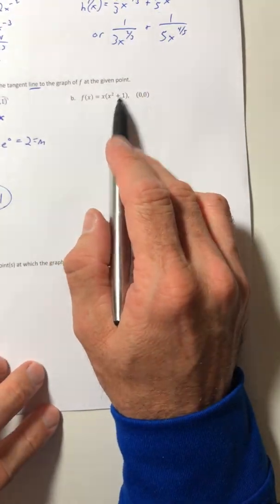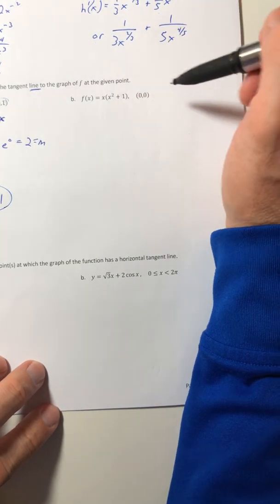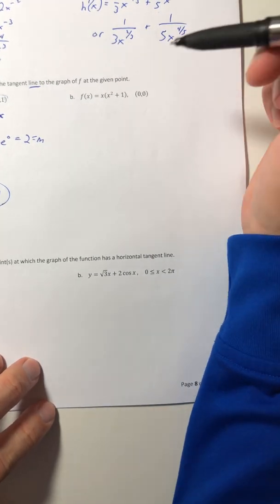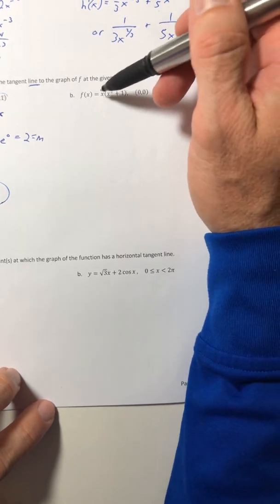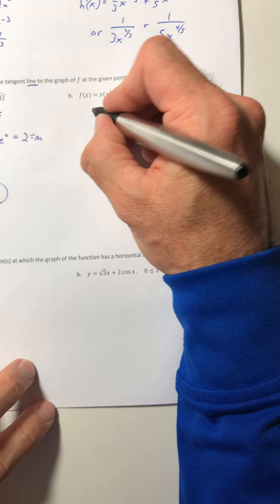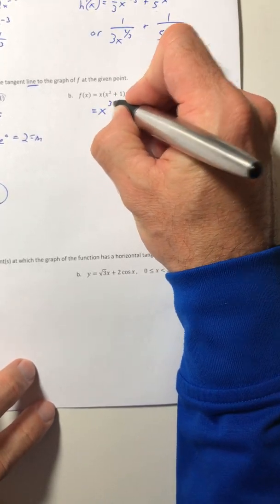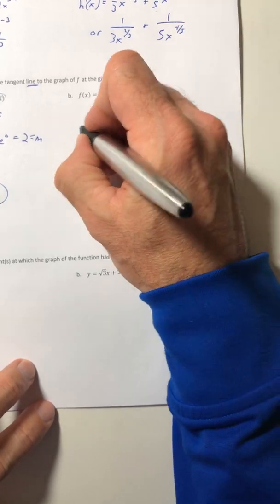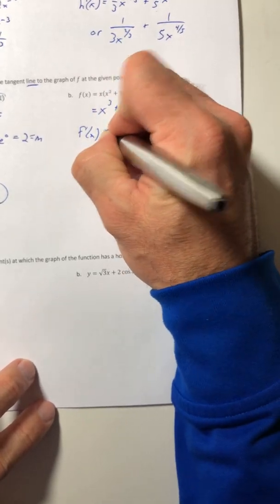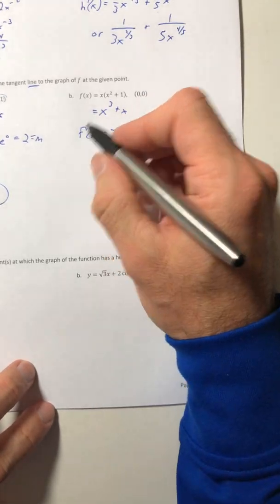Okay, let's look at part b. This one, you can't do the derivative yet because you have a product, and the power rule does not deal with products and neither did the other rules. So you can get rid of the product, just distribute it.